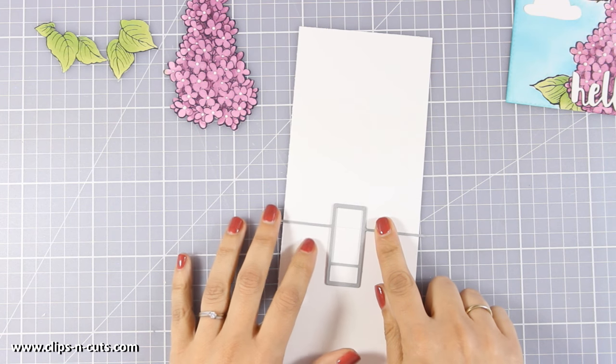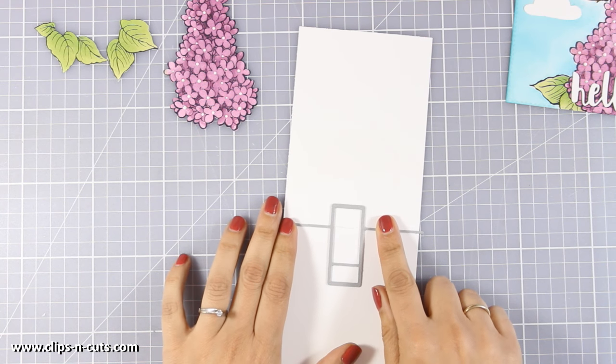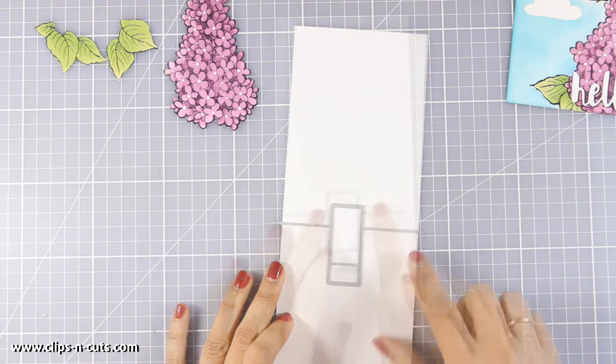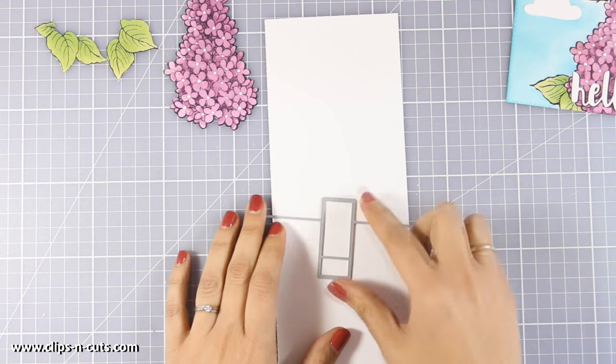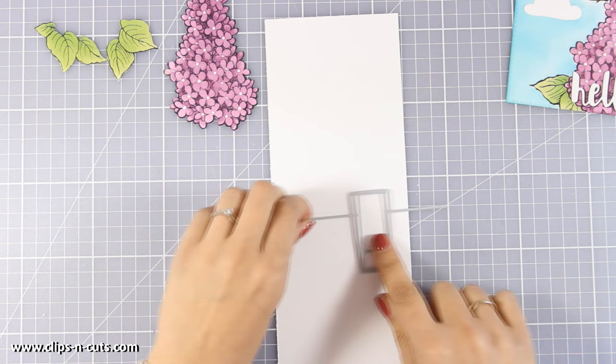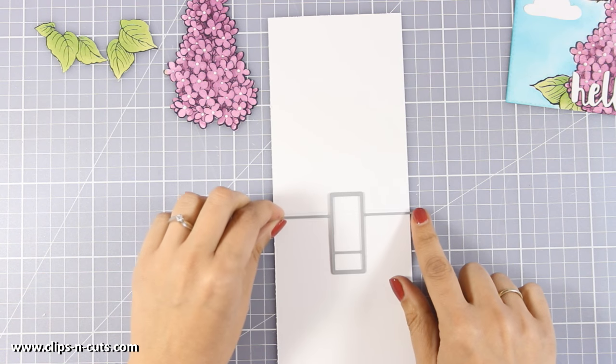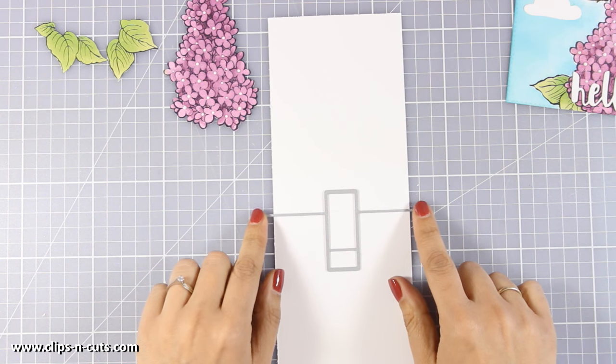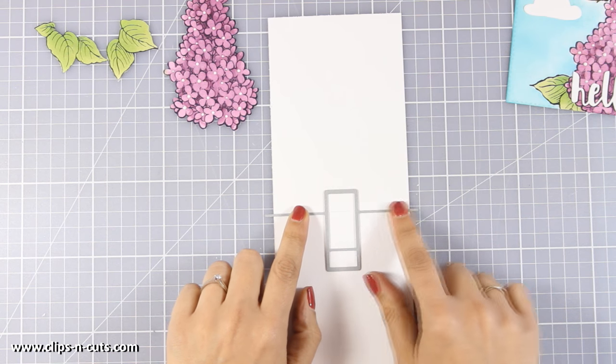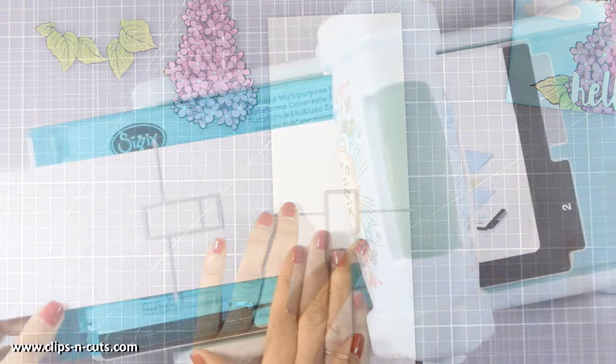So measure where the fold for your card should be and then place those lines just there. And what's fun is that you can slide it left or right so that you can add your elements on one side or another of your card. I decided to go at the center and I am going to run it through my die cutting machine.